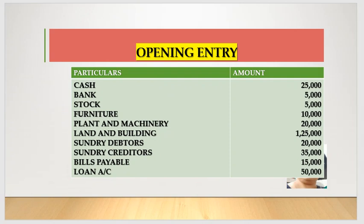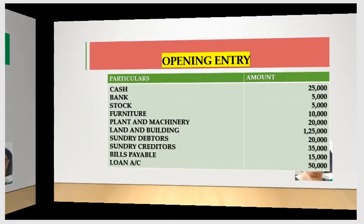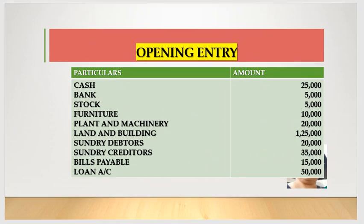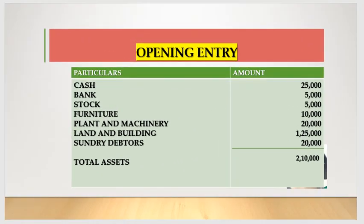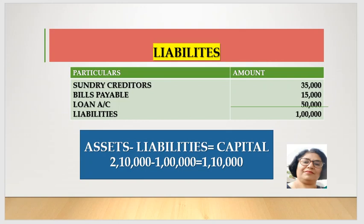Now what are we going to do? We are going to total the assets and total the liabilities. The total of all assets comes to 2,10,000. After that, we total the liability - sundry creditors, bills payable, and loan account - totaling 1,00,000. The capital is not given. So assets 2,10,000 minus liabilities 1,00,000 gives us capital of 1,10,000.